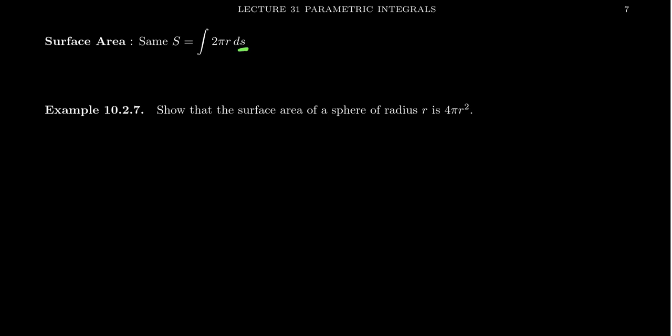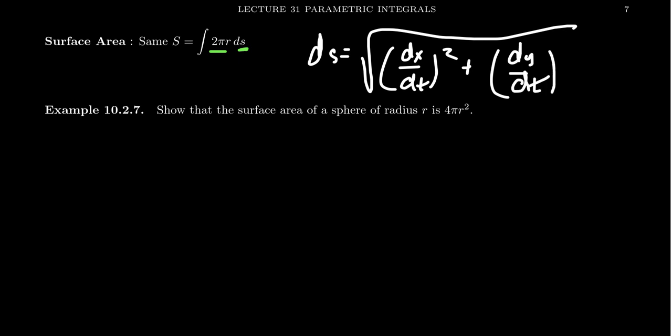If we can adapt the arc length, we're good to go. You just have to take 2π times the radius that you're spinning around your axis times the arc length. And we know how to adapt arc length here. Arc length ds is going to equal the square root of dx/dt squared plus dy/dt squared dt. We're going to use that here.